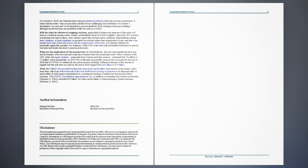What are the implications of the moratorium, for both landlords who are owed significant back rent, and for tenants who owe rent and could face eviction when the moratorium ends? Prior to release of the CDC order, the Aspen Institute, using data from census and other sources, estimated that 13 million to 17 million renter households, or 29 percent to 43 percent of all renter households, were at risk of eviction by the end of 2020 due to COVID-19-related job loss and economic hardship. Different estimates of the amount of unpaid rent that will have accrued by the end of 2020 ranged from $25 billion to $70 billion. While the CARES Act provided funding that some states and localities have used to assist renters, there have been calls from both tenant advocates and landlord and housing organizations for financial relief to assist either or both tenants and landlords in covering the backlog of unpaid rent and prevent future evictions.